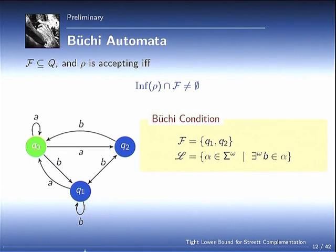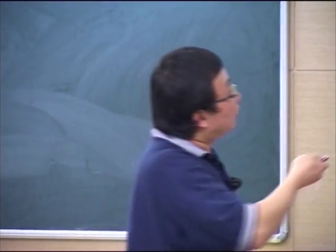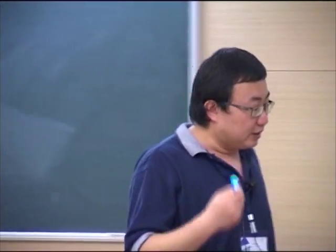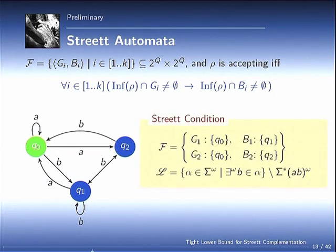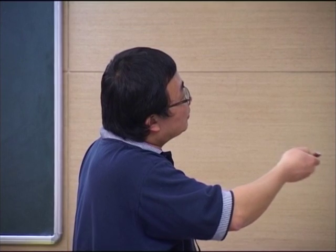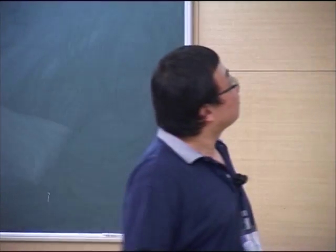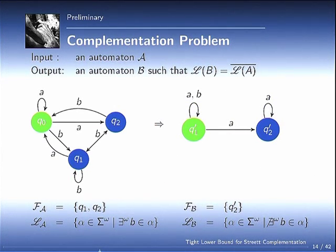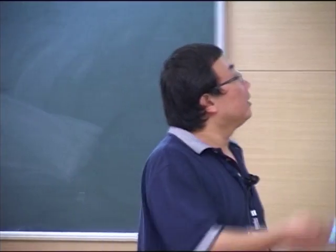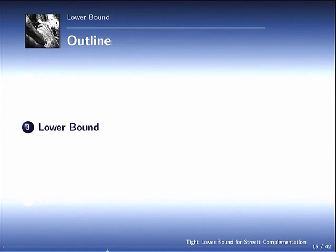So here is just an example of Büchi automata. If I put the F to be aside, say Q1 contains Q1 and Q2, then what language does this automata accept? It accepts all words that contain infinitely many Bs. Similarly, if I just make a small change to this F, I change this F to a K tuple which has two pairs, then what language it accepts? It's going to accept almost as before, except those words with alternating A and B. So the complementation problem is basically to get another automata which exactly accepts the complementary language.